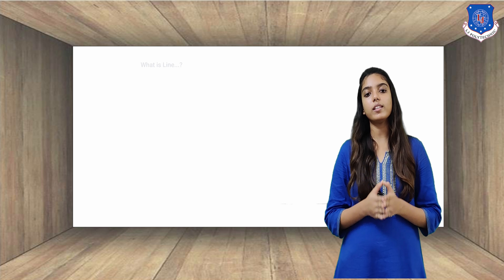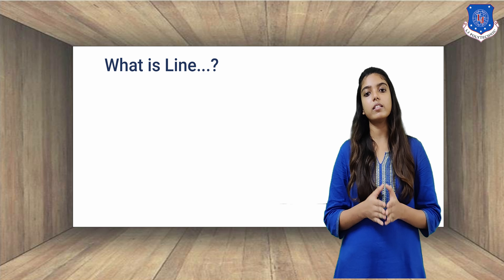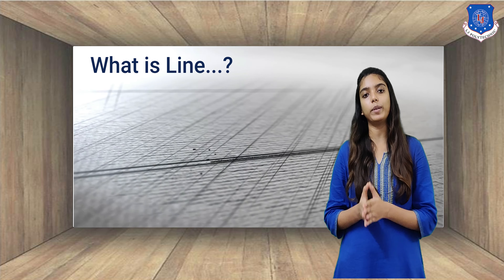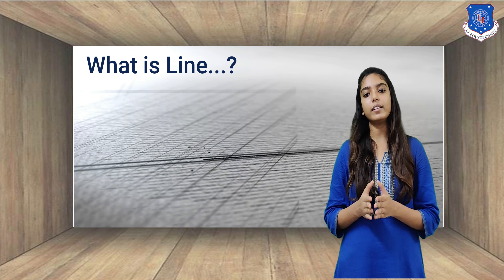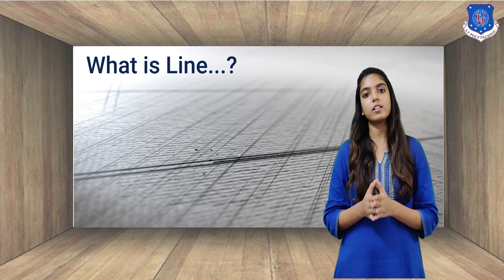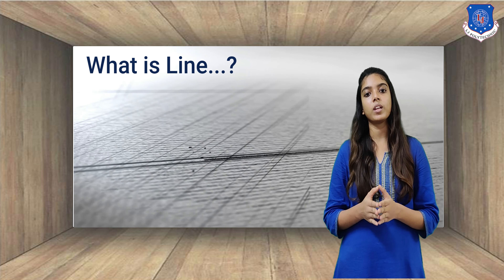What is a line? It is defined as that which has length without breadth. A straight line is the shortest distance between two points.